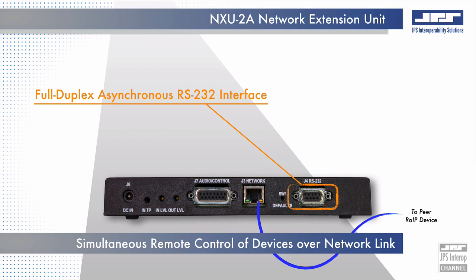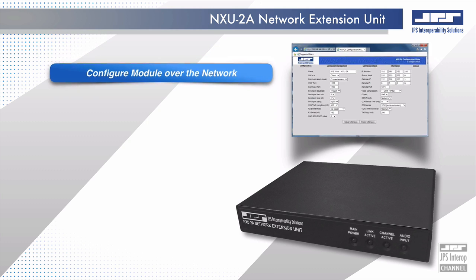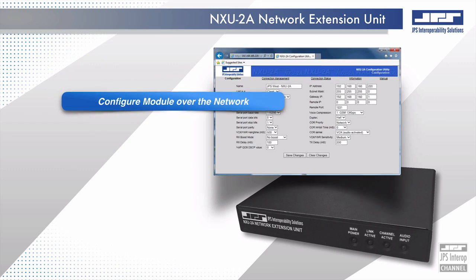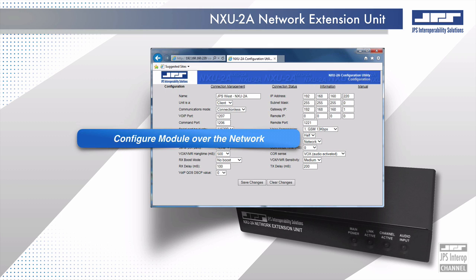The integral RS-232 interface allows for multiplexing of LAN mobile radio voice communications while simultaneously controlling and monitoring remote devices such as dispersed radio assets. Configuration of the NXU2A module can be accomplished using the RS-232 serial interface or by using the module's integral HTML-based configuration console, which allows for remote configuration capabilities over the network.